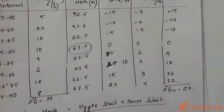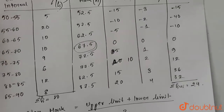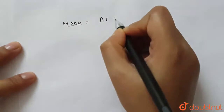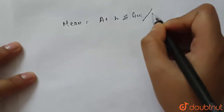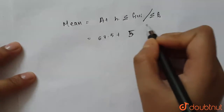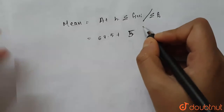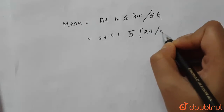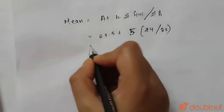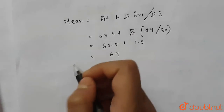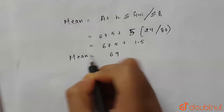Using the step deviation formula: mean = a + h × (Σfi·ui / Σfi). Substituting values: mean = 67.5 + 5 × (24/80) = 67.5 + 1.5 = 69. So our required mean marks is 69.